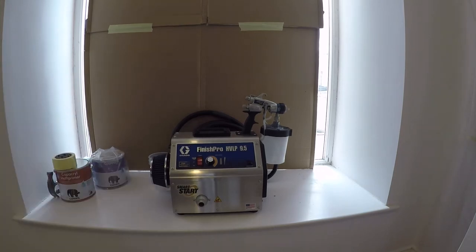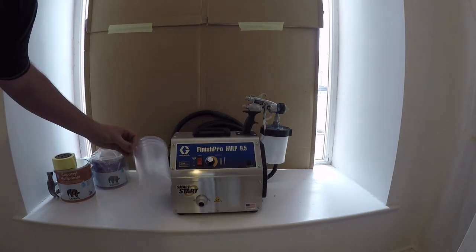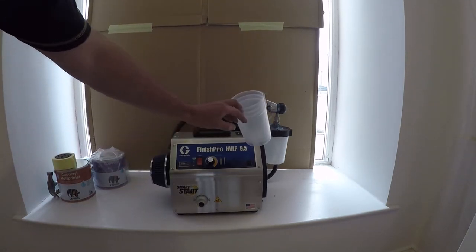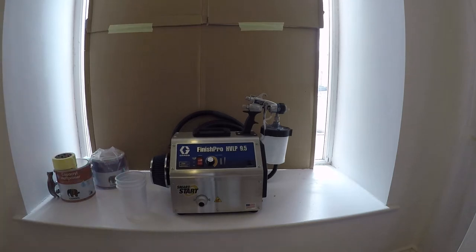So what we've got there is the machine, the gun, three spare flexi cups—there's one in the gun—the hose, and a whip hose. The whip hose is 1.2 meters, and this hose here is a 9-meter hose.